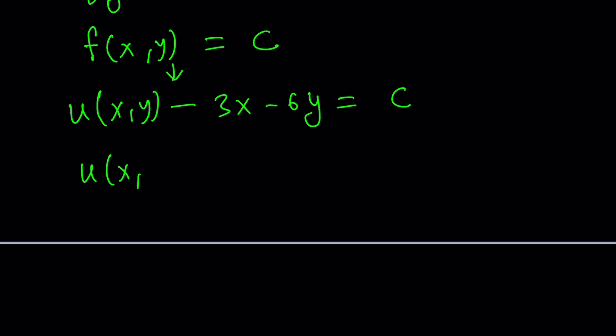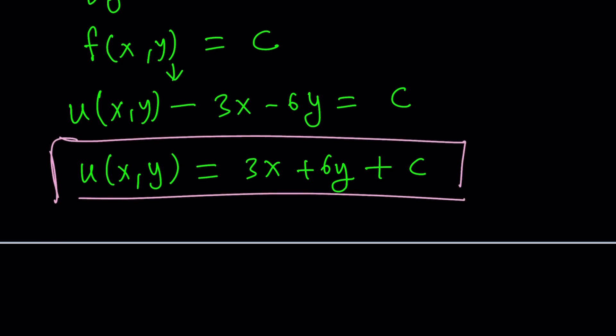So u(x,y) = 3x + 6y + c. So that will be the function that we are looking for. Now, if you go ahead and differentiate this, you're going to realize we actually get the given system.